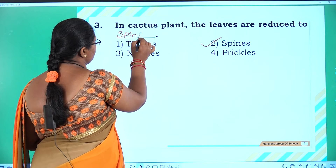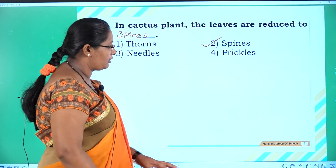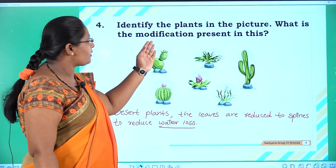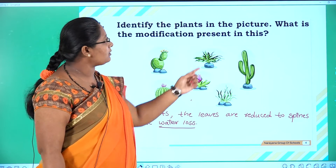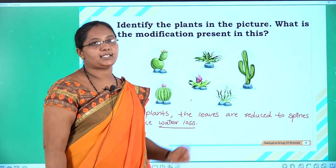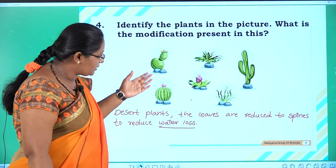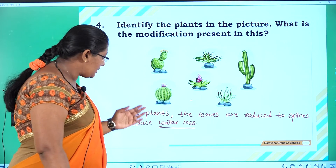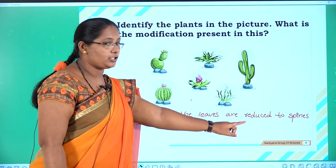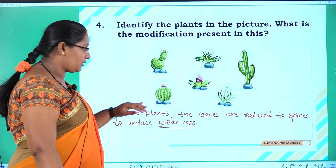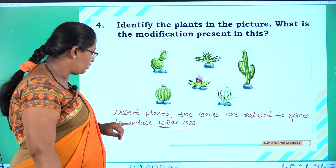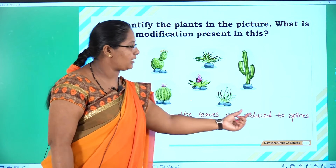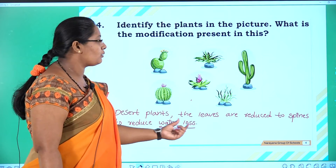Fourth question: Identify the plants in the given picture and what modification is present. Observe these diagrams — all of them are desert plants. In desert plants, leaves are reduced to spines. These spines are helpful to reduce water loss. So our answer is: desert plants have leaves reduced to spines to reduce water loss.